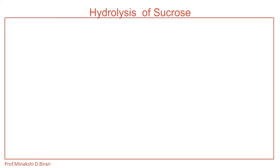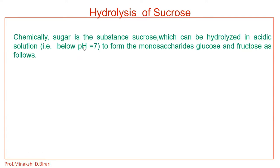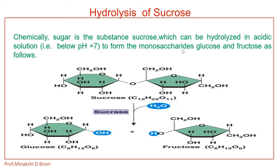What happens when hydrolysis of sucrose occurs? Sucrose can be hydrolyzed in acidic solution — that is, below pH 7 — to form the monosaccharides glucose and fructose. Monosaccharides have one sugar unit. Sucrose is a disaccharide, and disaccharides undergo hydrolysis to form two monosaccharide units: glucose and fructose.